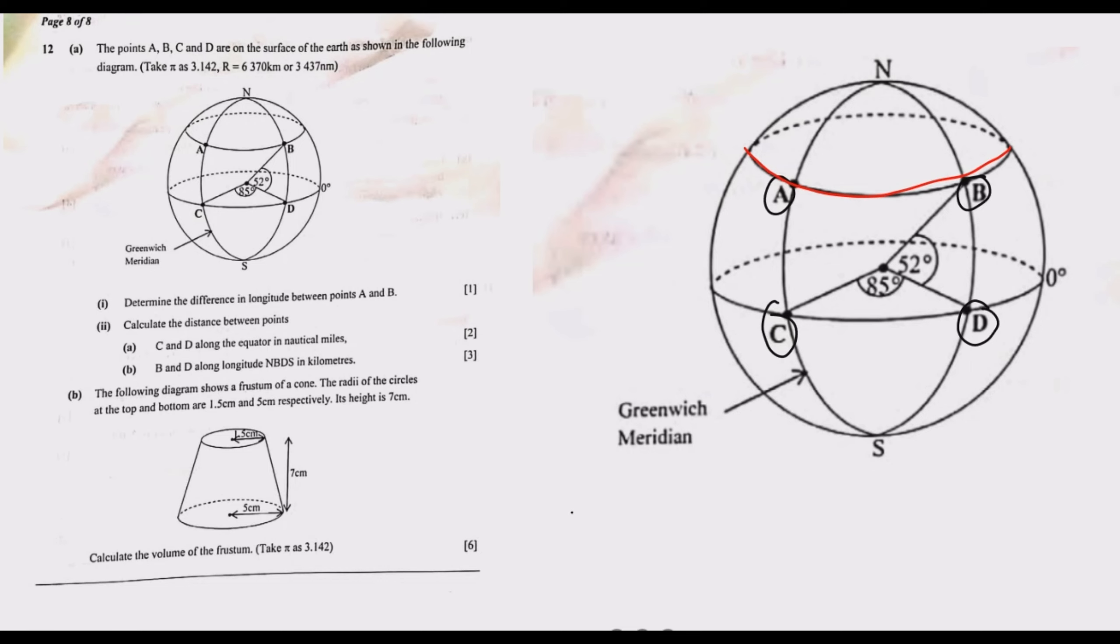The angle subtended here by point A and point B are the same. So if this is 85 degrees, this is also 85. In that case, the difference in longitude between A and B is the same as the difference in longitude between C and D, which is basically 85 degrees. That's how you get that one mark, as simple as that.